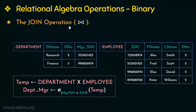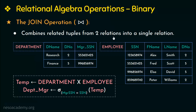The join operation combines related tuples from two relations into a single relation, so that related information can be presented in a single table. The only difference between a Cartesian product and the join operation is that in join, only combinations of tuples that satisfy the join condition are displayed, whereas in the Cartesian product all combinations of tuples from the two relations are included — there is no condition there.